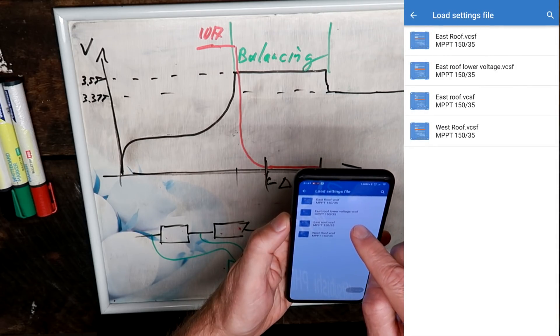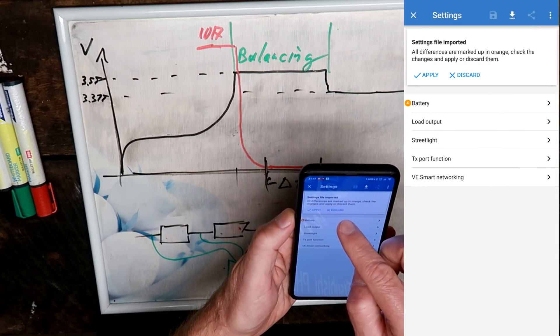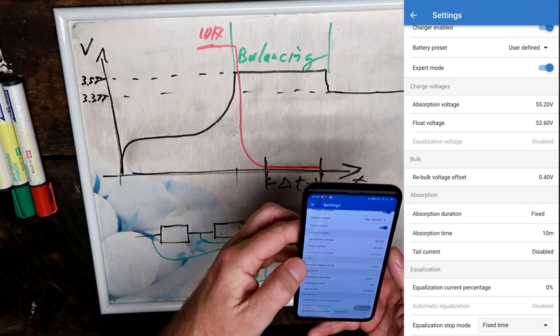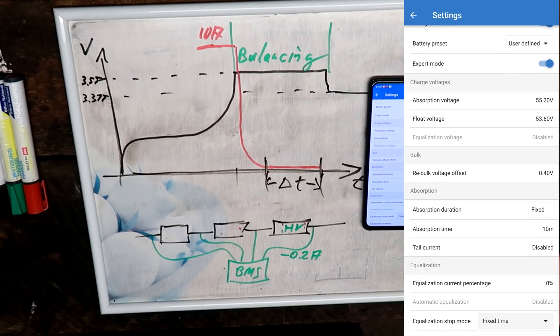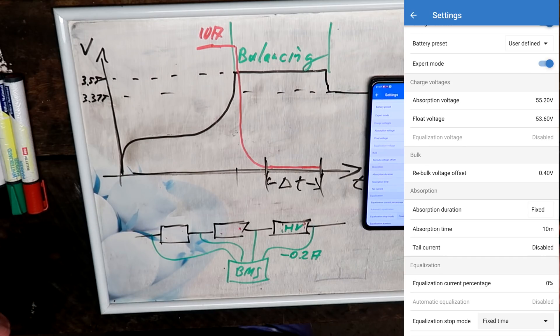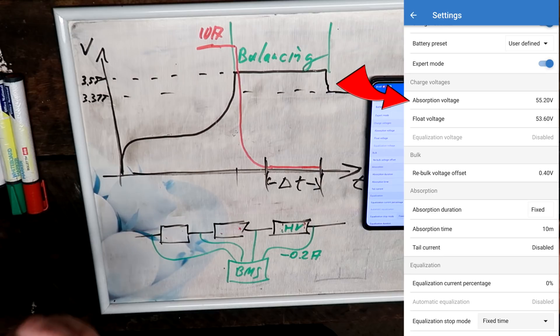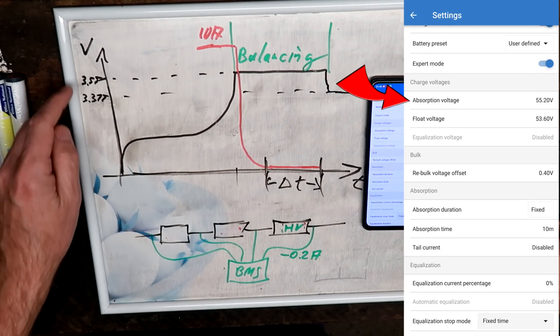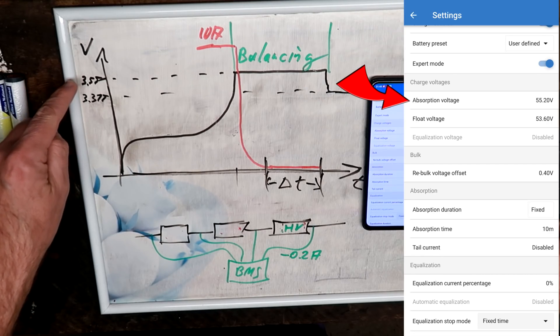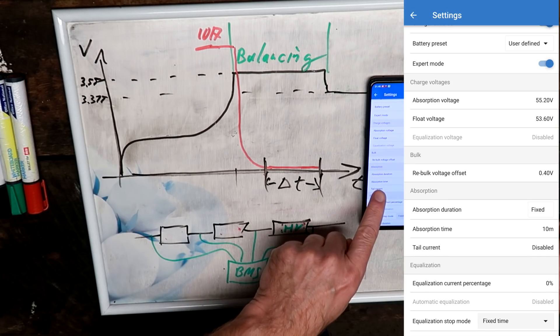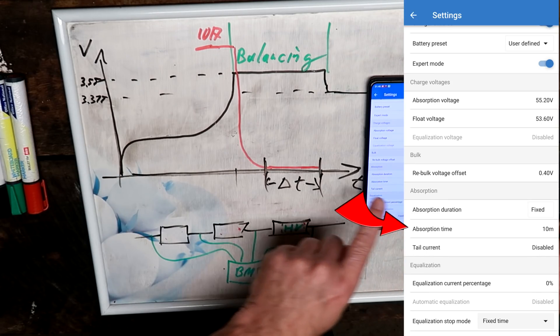Okay, I'm going to load the east roof lower voltage settings again and apply. I've just applied my settings again. So I have lowered my absorption voltage to 55.2 volts, which is 3.45 volts, so I'm going 0.1 volt lower for the absorption.